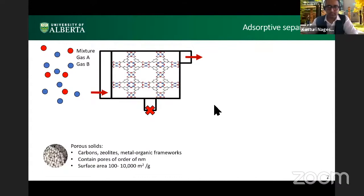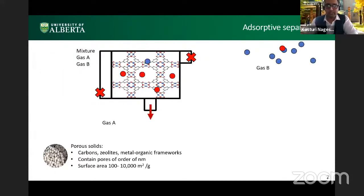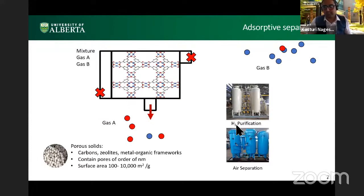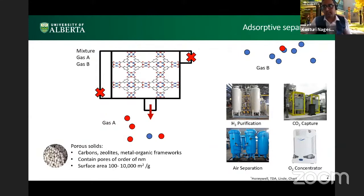So adsorbents are solid porous materials that have affinity to certain gases from a mixture of gases. We can use this property to separate out gas mixtures. And we can use this property to create processes that can separate out mixtures of gases to produce hydrogen, to separate air, to have medical oxygen concentrators. And in more recent times, it can be used to separate CO2 from flue gas for CO2 capture.